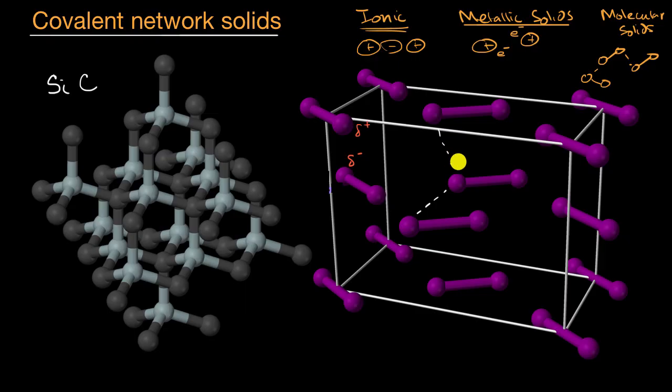If you wanted to melt this molecular solid, you'd have to essentially overcome these intermolecular forces. In a covalent network solid, the solid to a large degree is made up of covalent bonds. If you wanted to melt this, you would have to overcome these covalent bonds, which generally speaking are stronger than intermolecular forces.